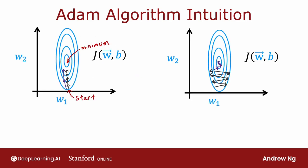And the intuition behind the Adam algorithm is if a parameter wj or b seems to keep on moving in roughly the same direction. This is what we saw on the first example on the previous slide. But if it seems to keep on moving in roughly the same direction,